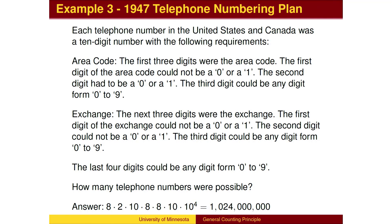We need to multiply our 10 steps together: 8 possible 1st digits, 2 possible 2nd digits, 10 possible 3rd digits, 8 possible 4th digits, 8 possible 5th digits, 10 possible 6th digits, and 10 possibilities for each of the last 4 digits, for a total of 1,024,000,000 possibilities.